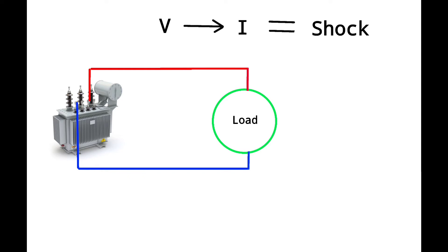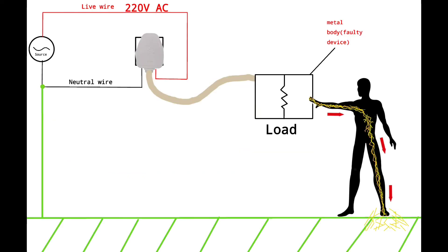Current starts flowing through his body and he gets electrocuted. The current is flowing through his body and going to the earth which is connected to the neutral. Here the man becomes a load, he completed the circuit.